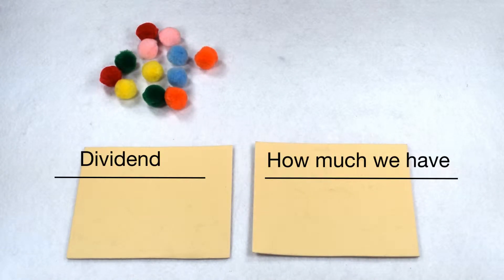In a division problem, the dividend tells us how much we have and the divisor tells us how we're going to group it.